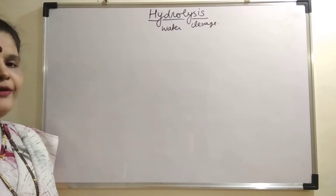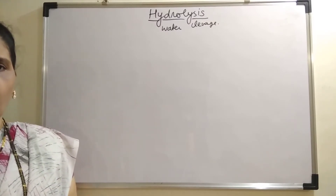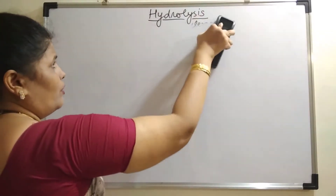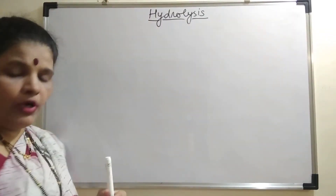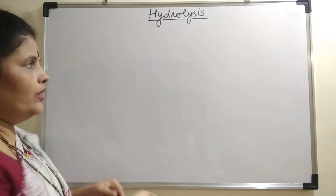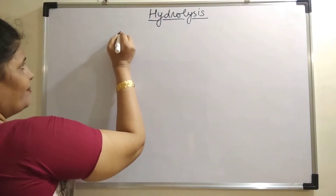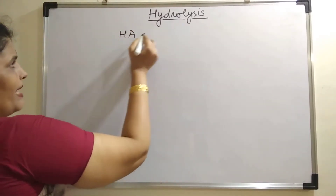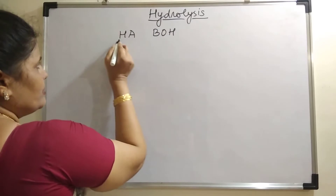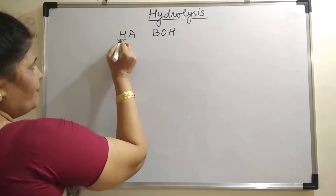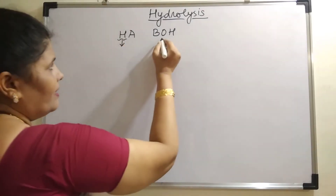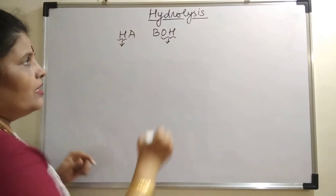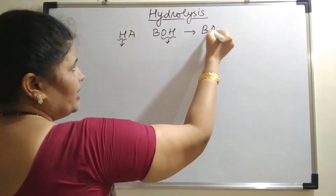We will be studying hydrolysis of some types of salts. Before going into the concept of hydrolysis, you must know what hydrolysis is. For that, let us consider a salt. In this chapter, an acid is denoted by HA and a base is denoted by BOH. If H is given out, it acts as an acid; if OH is given out, it acts as a base. So what we will use for a salt is BA.